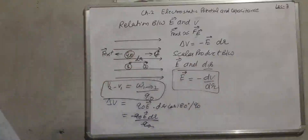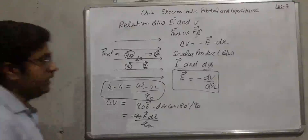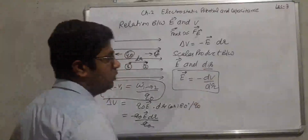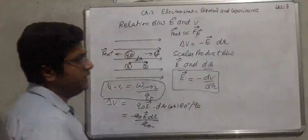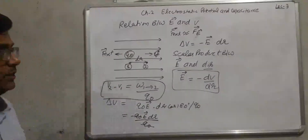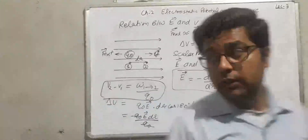From this you can write E = −dV/dr. This is the relation between electric field and potential. If you just want to calculate the magnitude, take the modulus: E = dV/dr. This is a very important relationship.